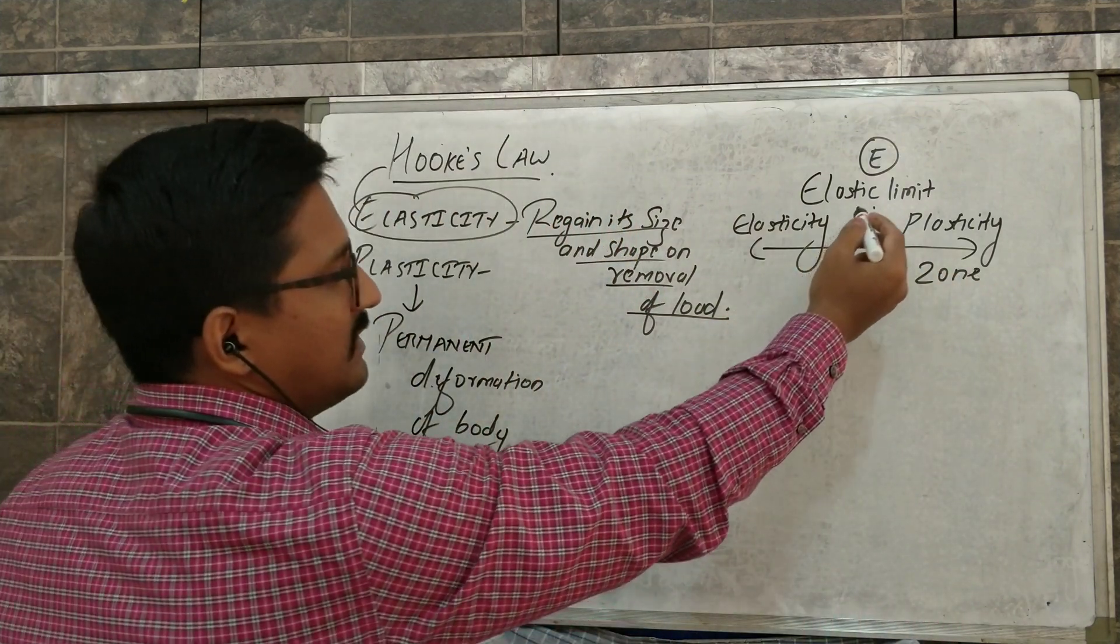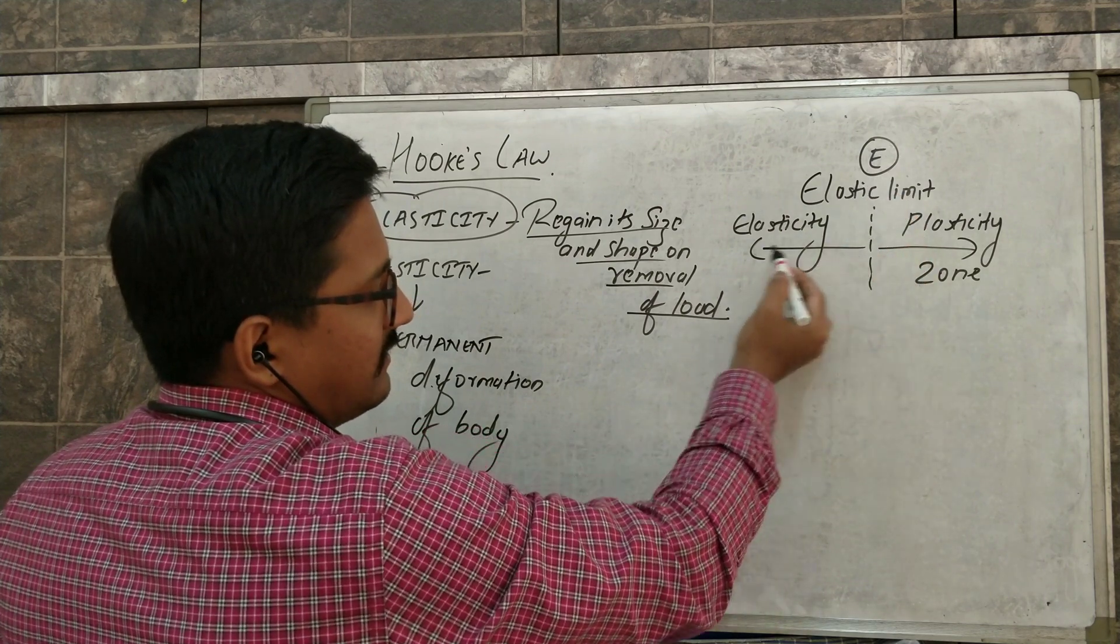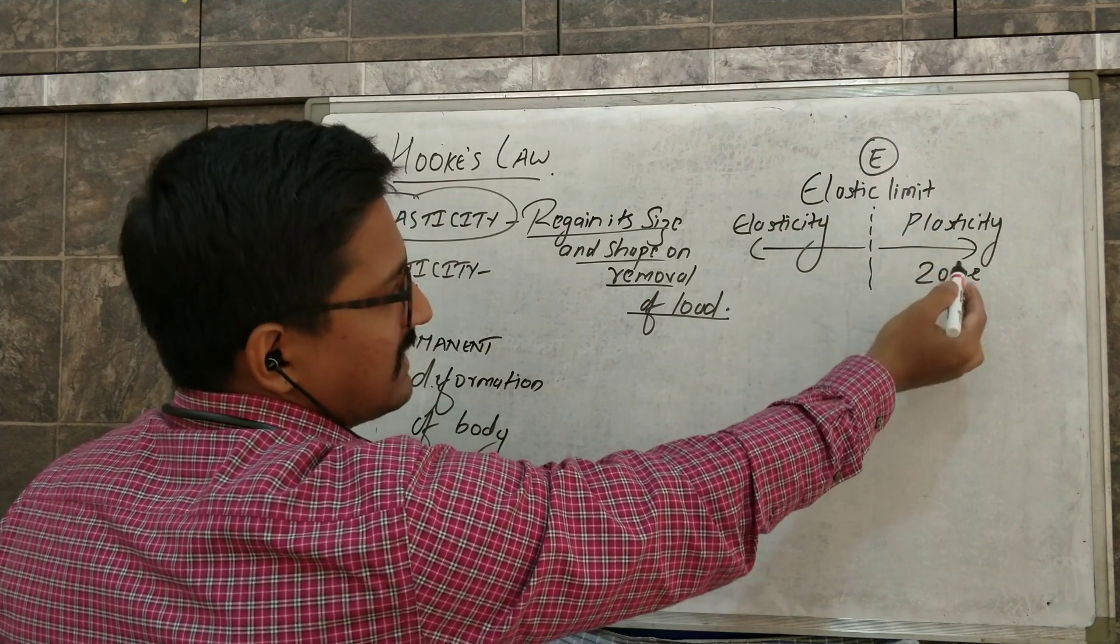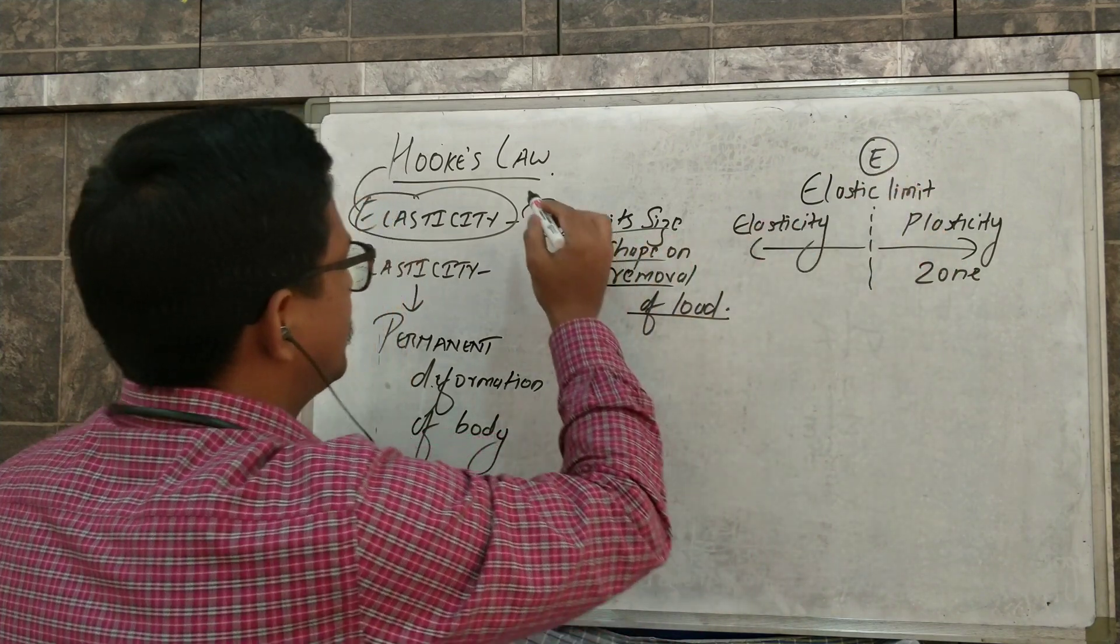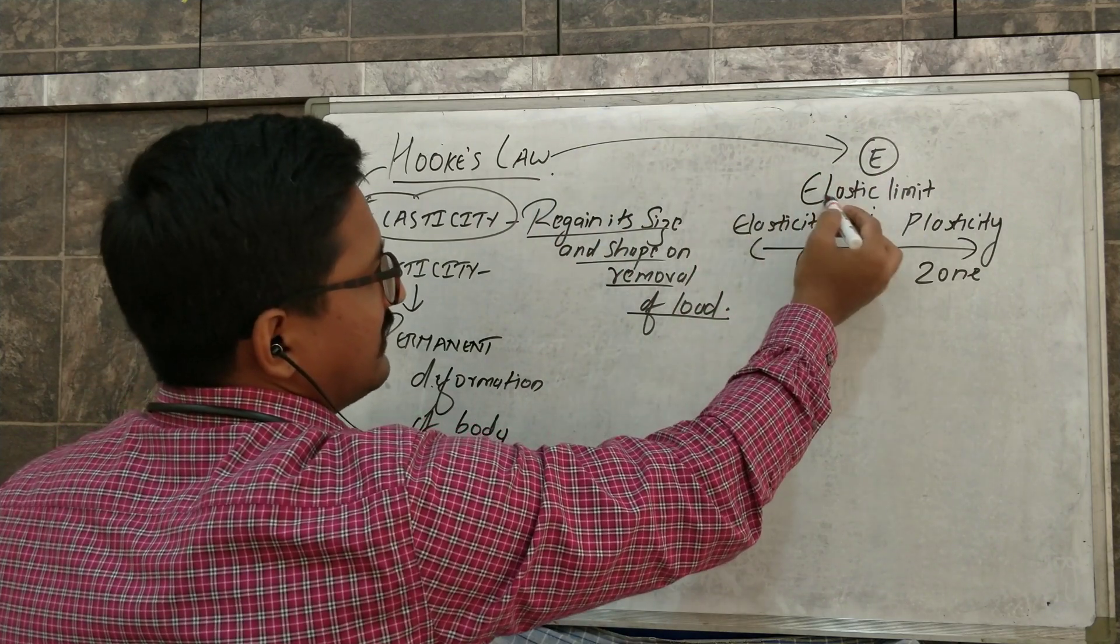So for every ductile material there is an elastic limit on this side and if you cross the elastic limit there will be a plastic zone on that side. So our Hooke's law is directly related to this elastic limit.